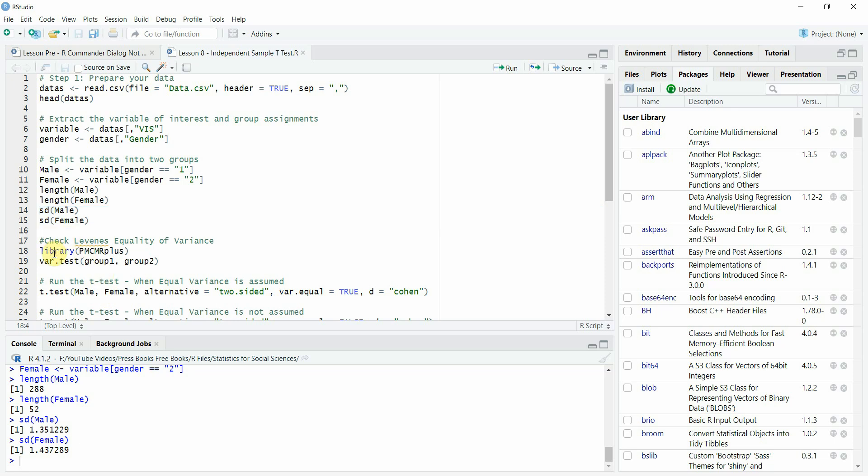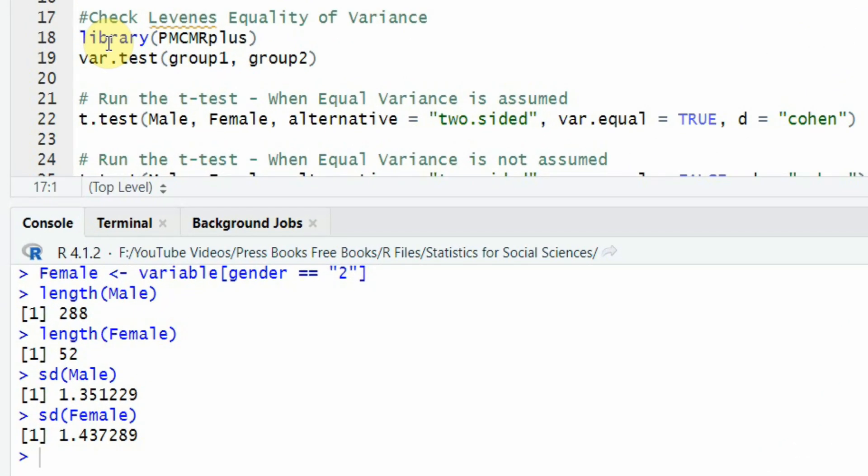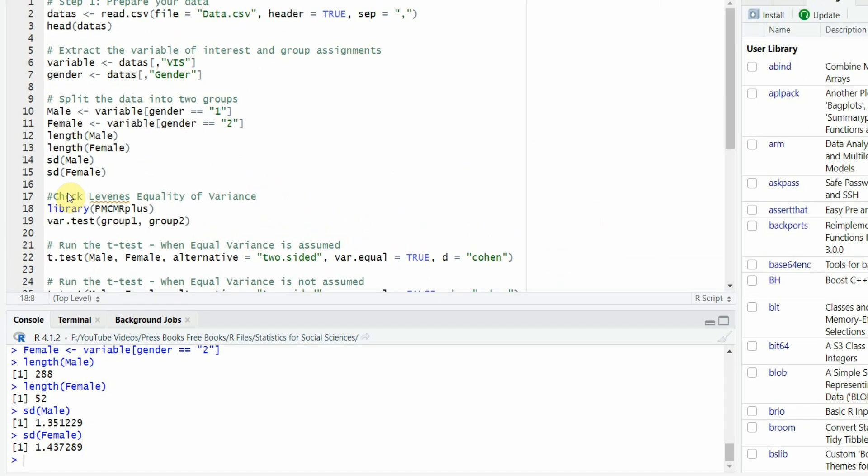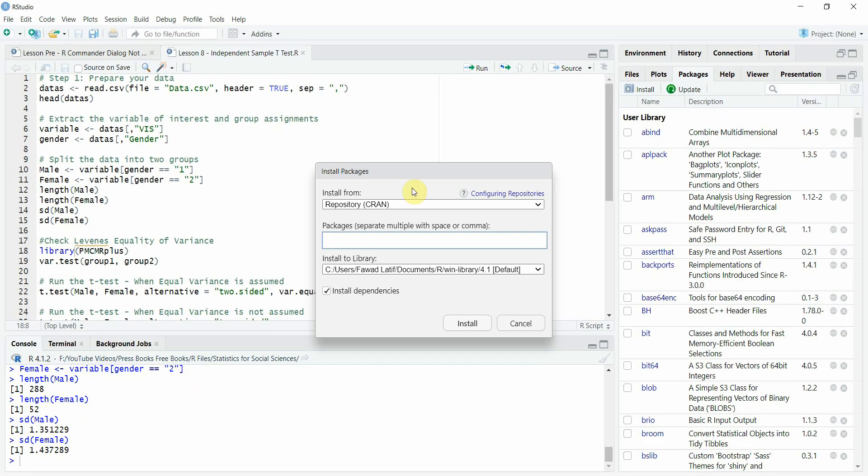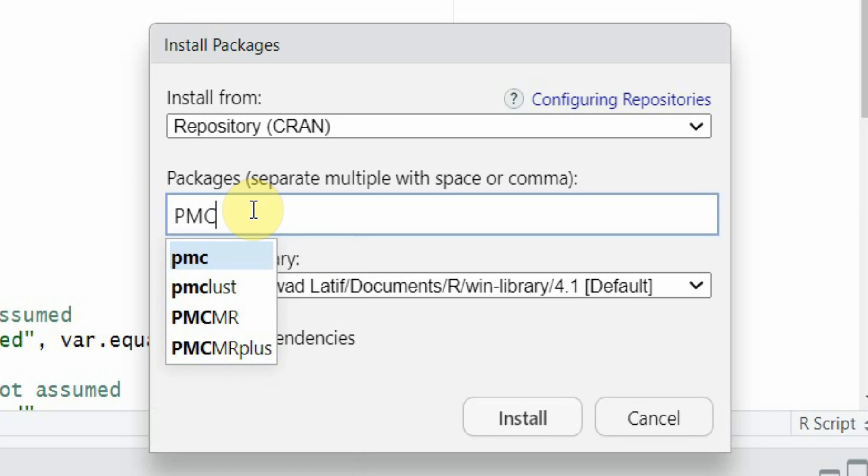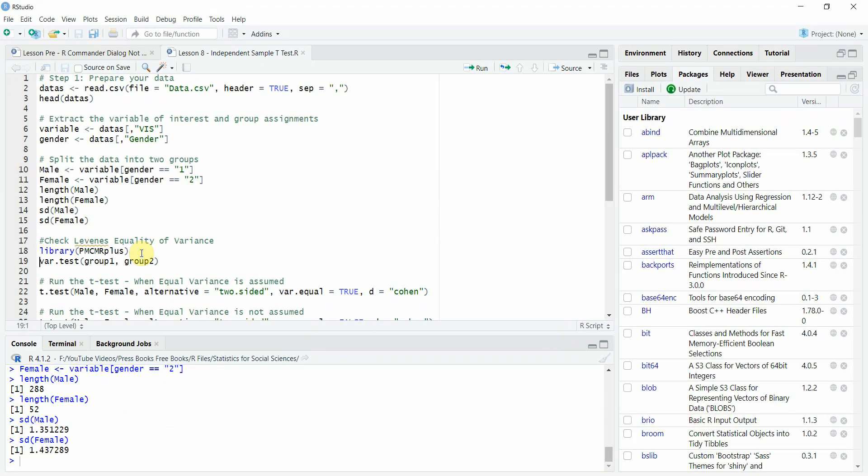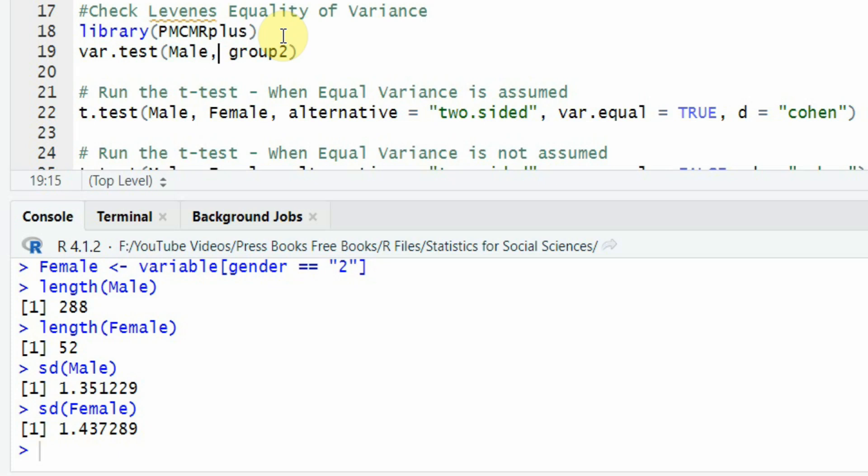Now before I move on, I need to assess the homogeneity of variance. You can check the outliers and the dependent variable is already on continuous scale. You can check for outliers using different methods. The video will be shared in the description. Now to test the homogeneity of variance using Levene's equality of variance, we need this library PMCMR plus. If it is not installed, you can go to tools, install packages and just write in PMCMR plus. You select it and install it. Now I'm going to call this library. Group one is male and group two is female. Let's call the library and see our homogeneity of variance. Run it.